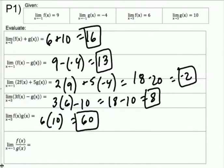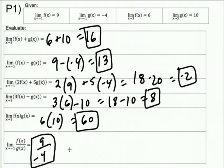Using the negative one values for the last one, F over G gives the answer as a fraction. If you want to make it negative 2.25 you can, but I'd recommend you don't do any more math than you have to.